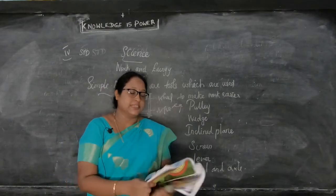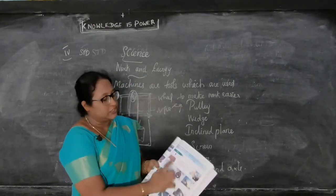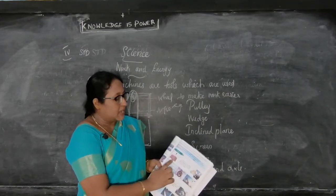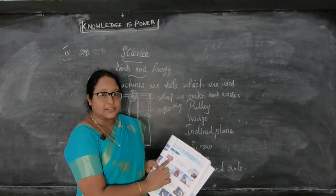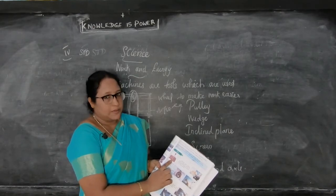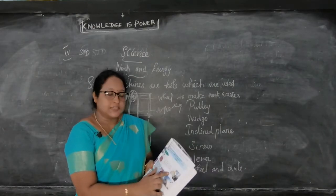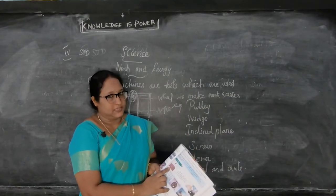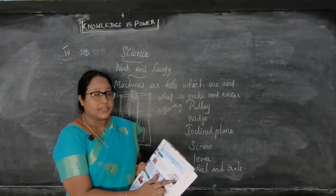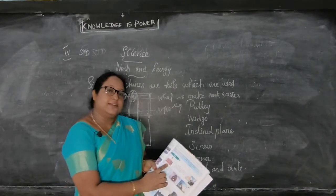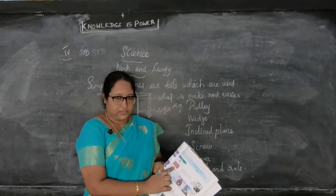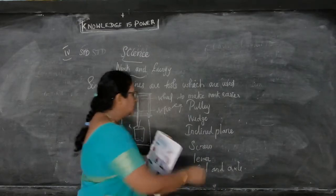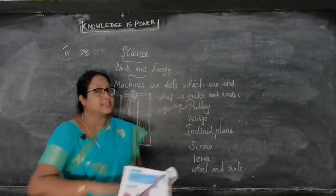Now first we will see the pulley. See the picture here children — two pictures are given. One man is lifting boxes with his hands, and on another side you can see a crane lifting the box. Which is easier? The crane is easier — it is a simple machine. Rather than lifting by hand, you can lift a box with a crane. This makes work easier. That is a pulley — the crane is an example.